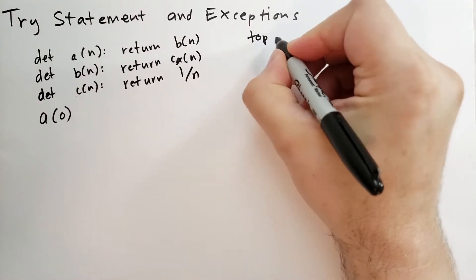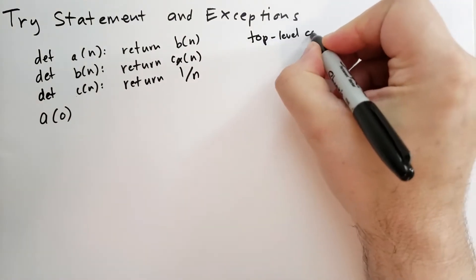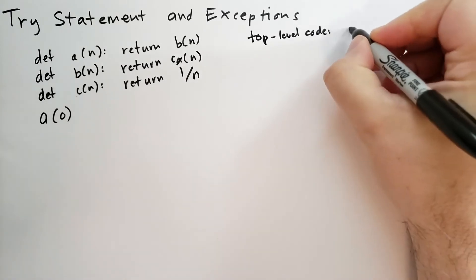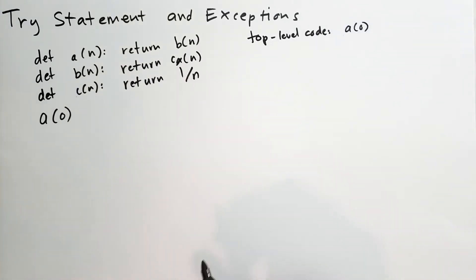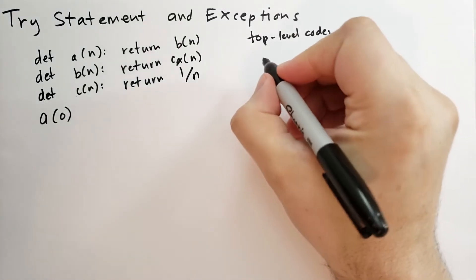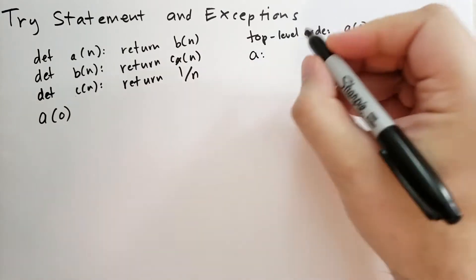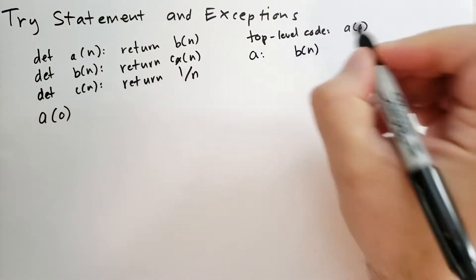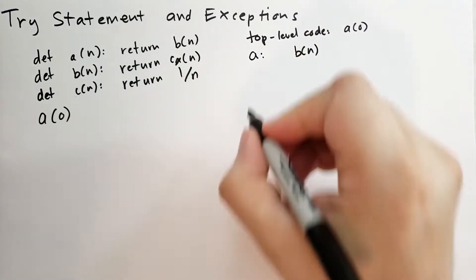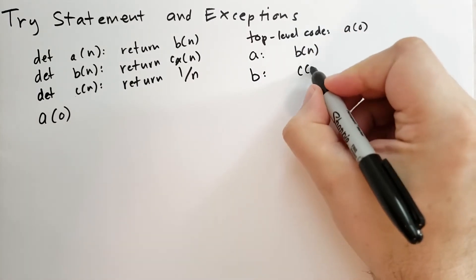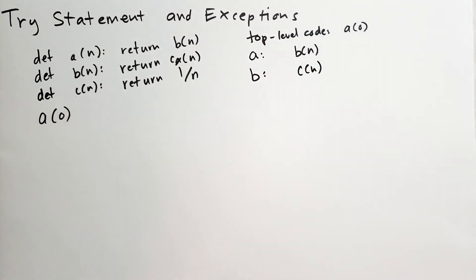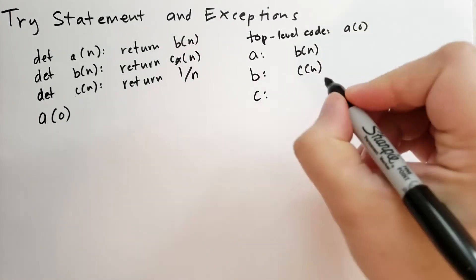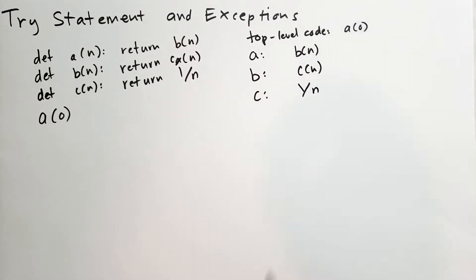So we would have the top-level code. It's calling a of 0 and trying to find the result. Then it calls a, and it is calling b of n and trying to return that result. That's calling b, which is calling c of n and trying to return that result.